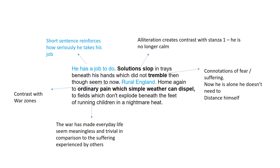Thinking back to the previous stanza where the photographer compares himself to a priest, you really see how important he finds this role — how important it is to share images of war with people back at home. The alliteration of 'solution slopping' contrasts with the calm, calculated alliteration of stanza one. 'Tremble' has connotations of fear and suffering — alone in his darkroom, he no longer needs to distance himself from that pain, and the reality of what he witnessed begins to set in.